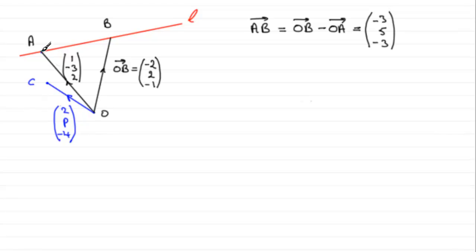We're told though that AC is perpendicular to the line L. So if I just draw that part in, we're told that it makes a right angle perpendicular to L. And we've got to find out this value of p.